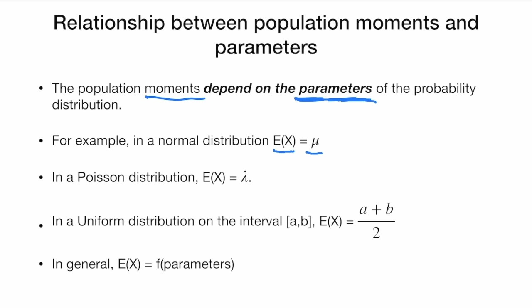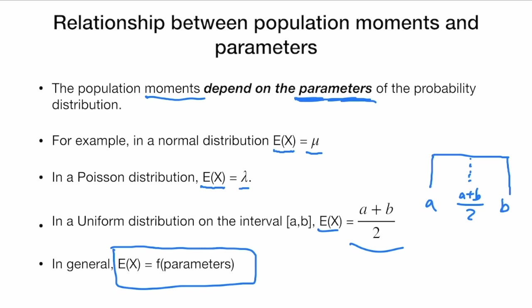In a Poisson distribution, the expected value can also be expressed as the parameter lambda. It doesn't need to always be exactly equal to the parameter. For instance, if we have a uniform distribution on the interval a to b — all values between a and b are equally likely — then E[X] is the average of those values. So in general, the expected value of X is a function of the parameters.